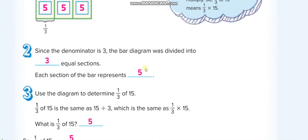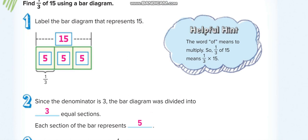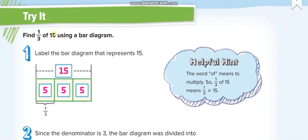And the other way, as I told you guys, without using the model, just multiply the whole number with the numerator. 15 times 1 is 15, and divide it with the denominator. 15 divided by 3 is 5.